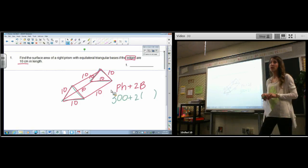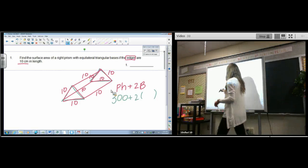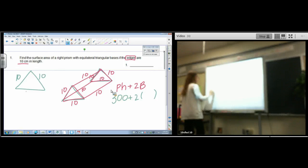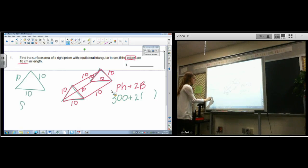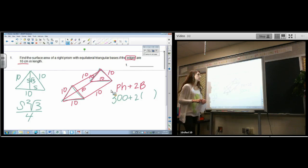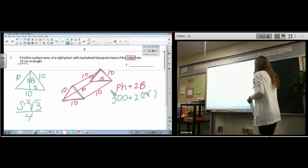And then 2 times, ooh this is the toughest part. The area of the base is asking you to find the area of an equilateral triangle. You may use this formula, side squared root 3 over 4. If you don't have that formula committed to memory, you can find the height and you can do base times height divided by 2. It's up to you. So 100 root 3 over 4. What's 100 divided by 4? 25. So it's 25 root 3.